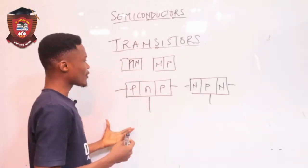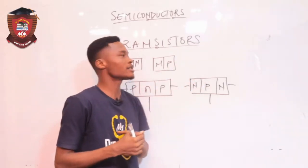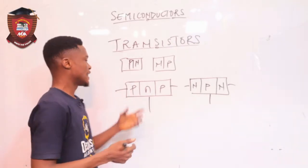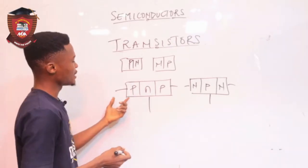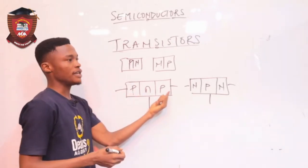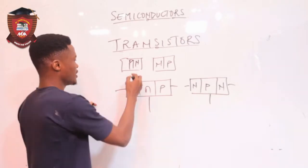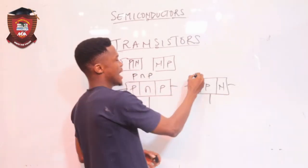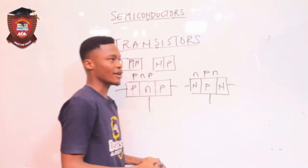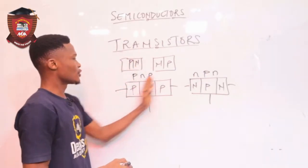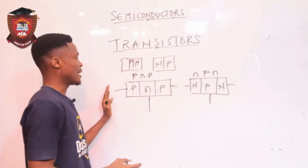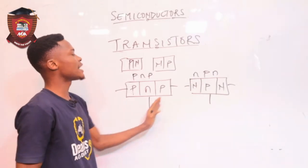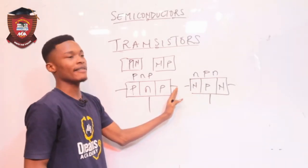From this diagram, we have two types of transistors. The first type is the PNP transistor, and the second is the NPN transistor. The transistor has three terminals — this terminal, this terminal, and this terminal.